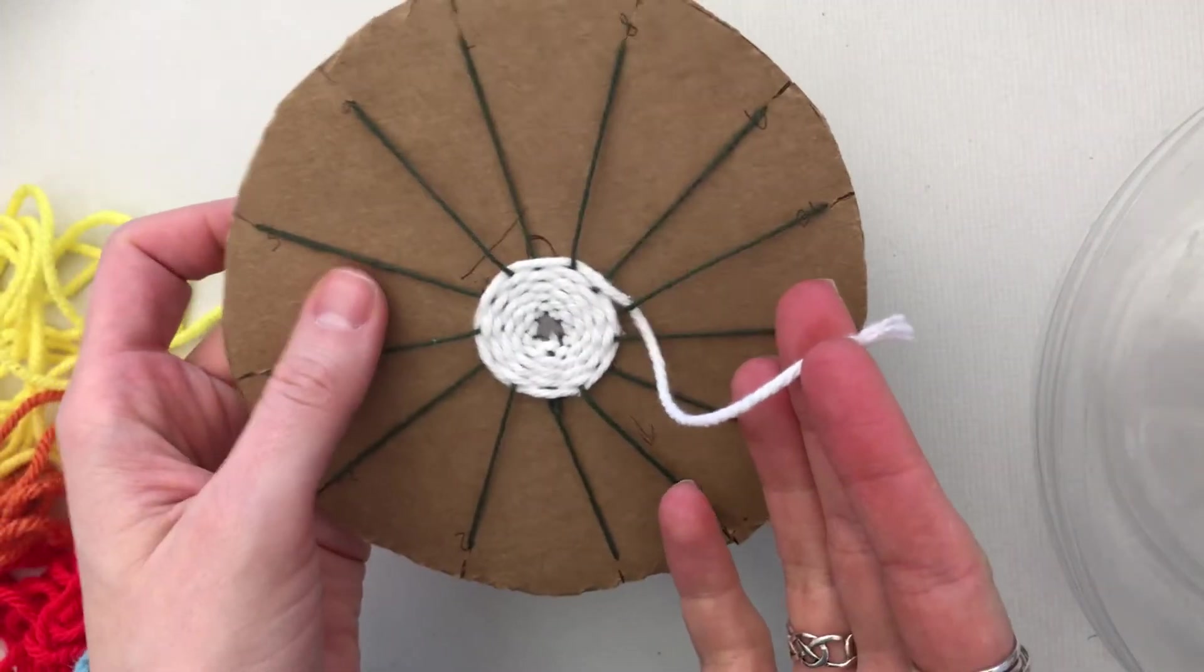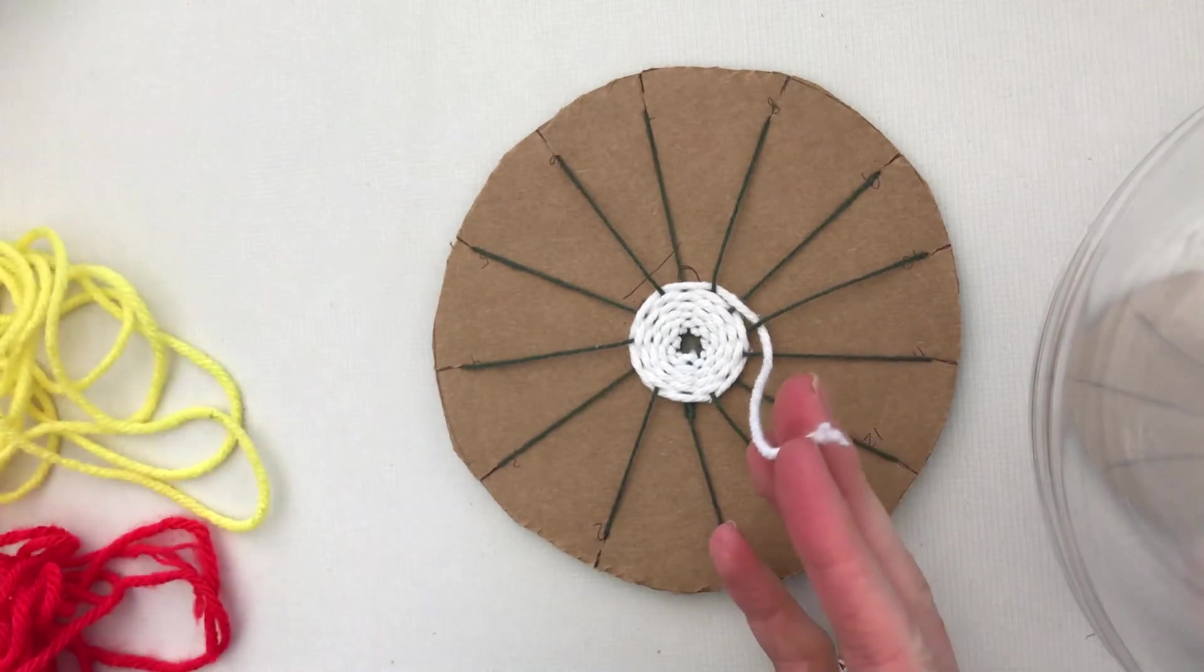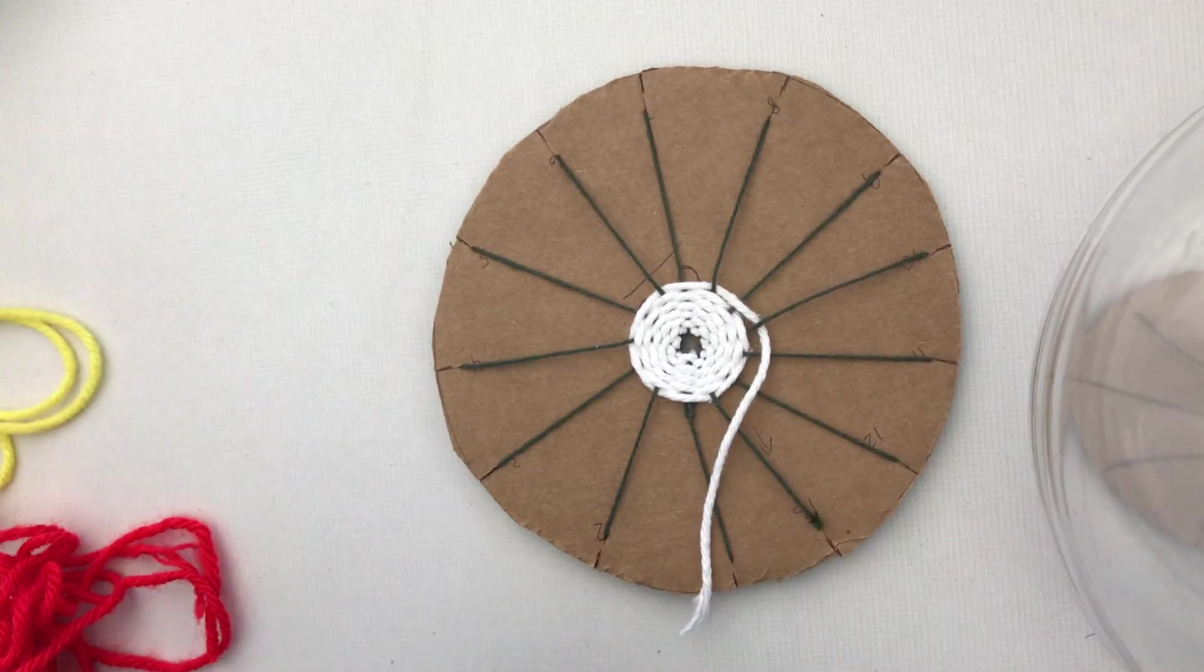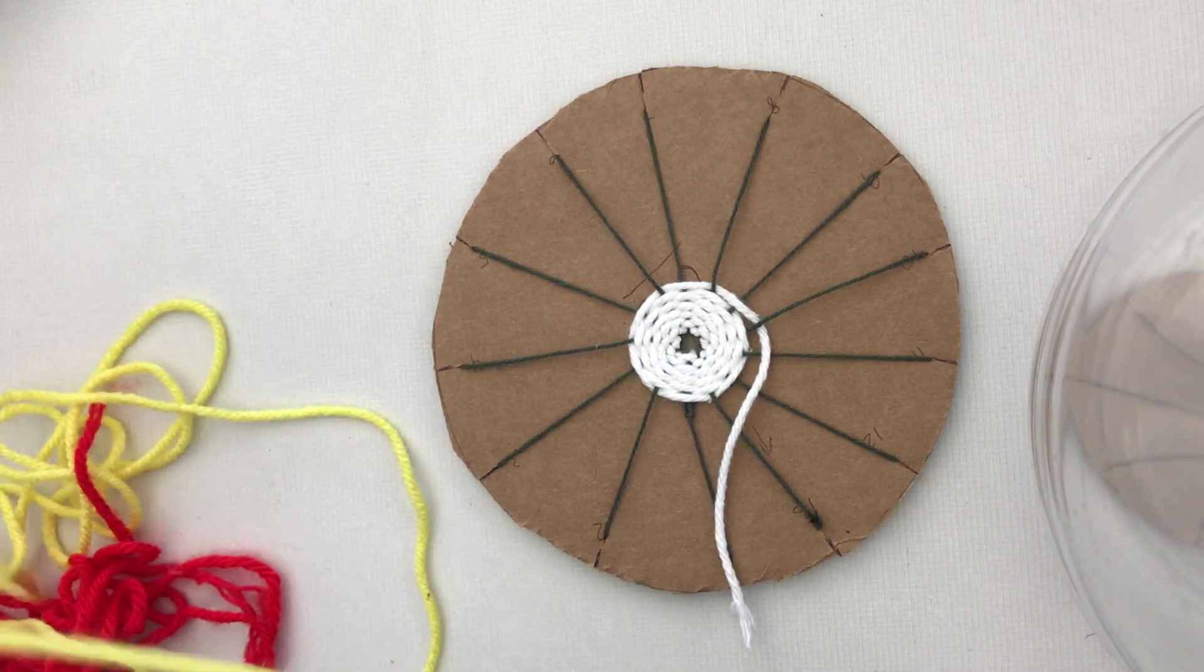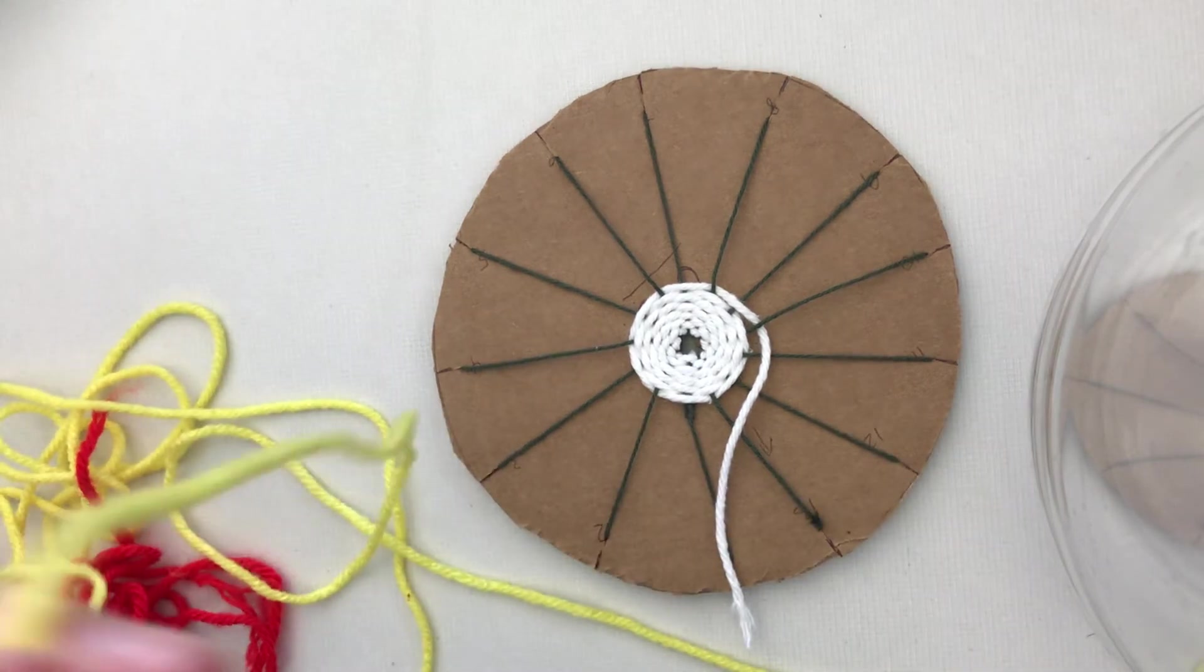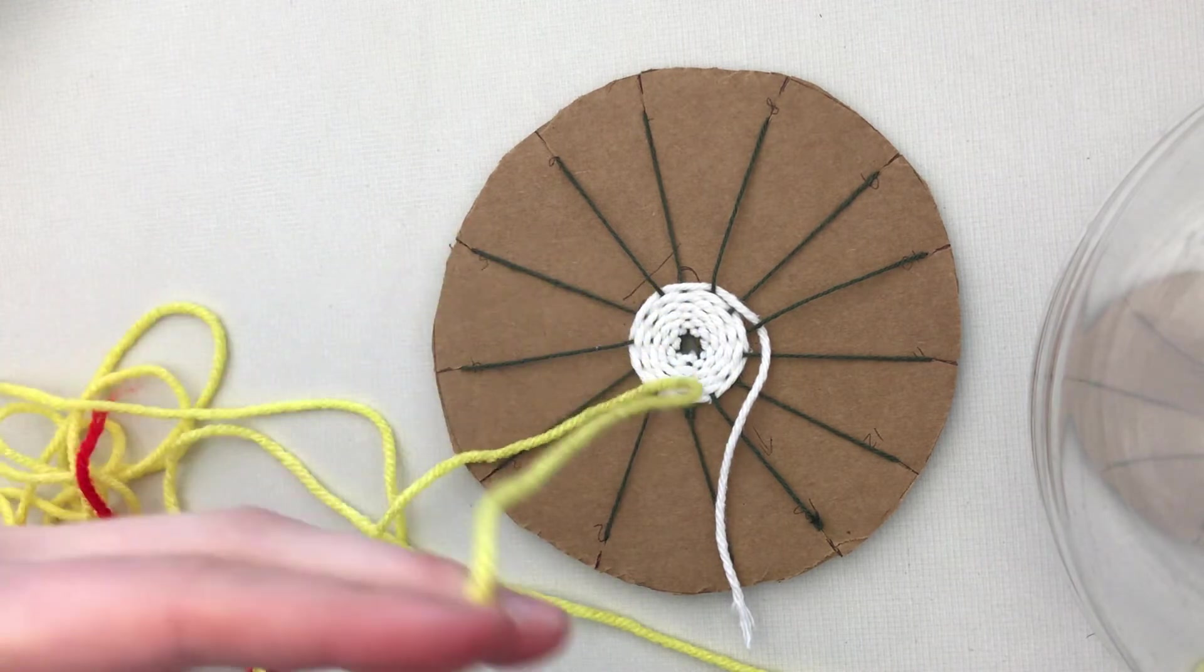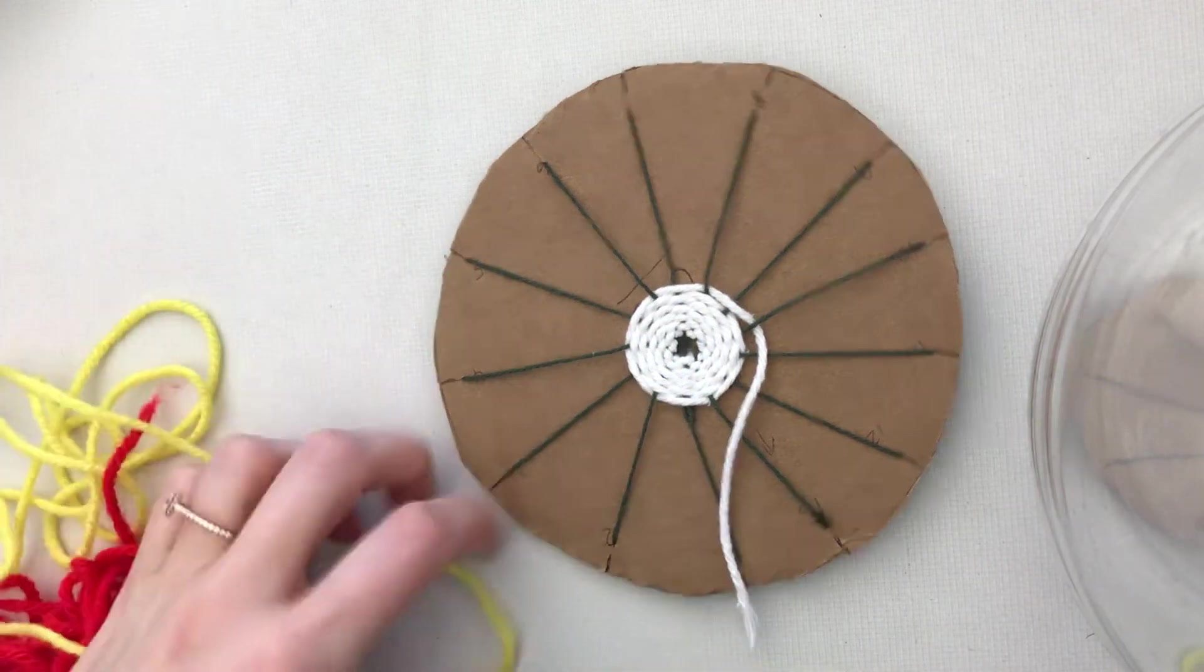Once you have just about reached the end, then you want to choose your next color and cut off a snippet of yarn for that. However long you think—you can always cut more off later or add more.